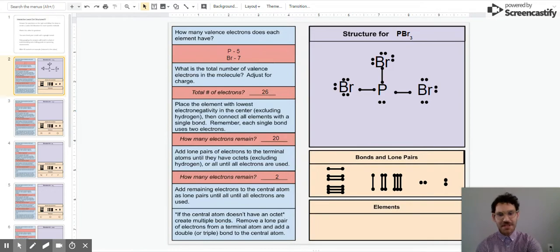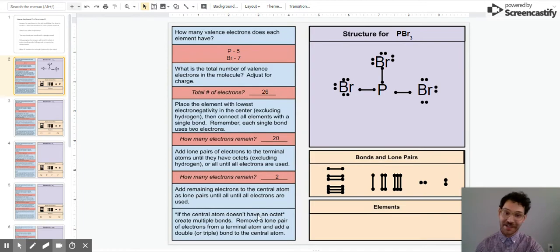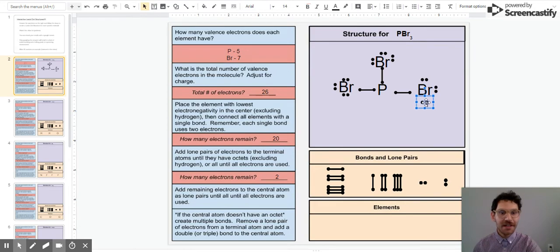This looks like a good molecule, but we should still go through the rest of this step. Let's pretend we didn't have this lone pair and phosphorus doesn't have an octet. We're going to create multiple bonds by removing a lone pair of electrons from one of these terminal atoms. Since they're all bromines, it doesn't matter which.